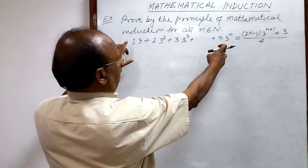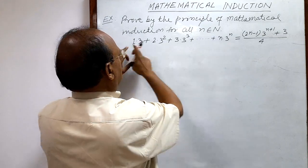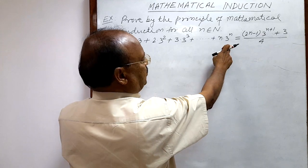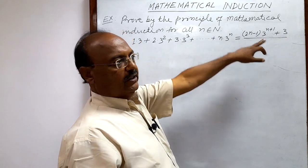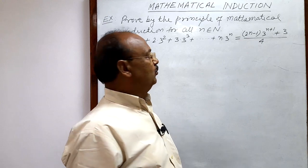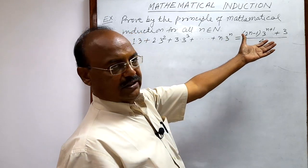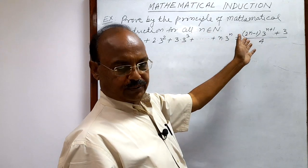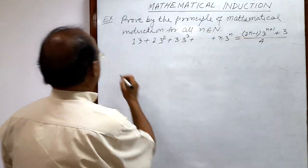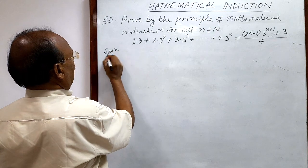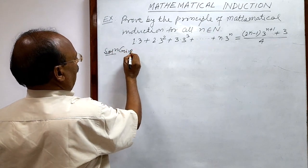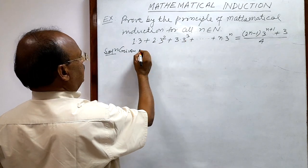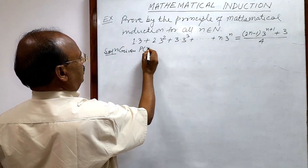In the left hand side you see the total number of terms is n — first, second, third, up to nth — and this is the right hand side. So we have to prove that LHS is equal to RHS, meaning we have to show that this given statement is true. The given mathematical statement is denoted by the notation P(n).